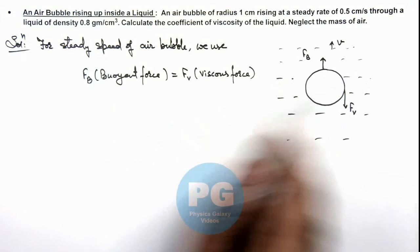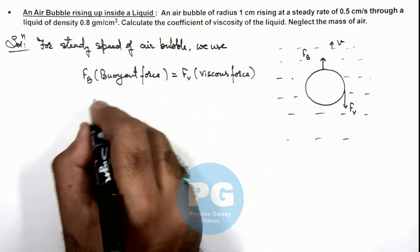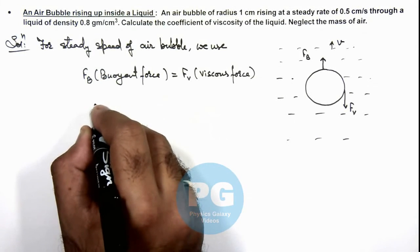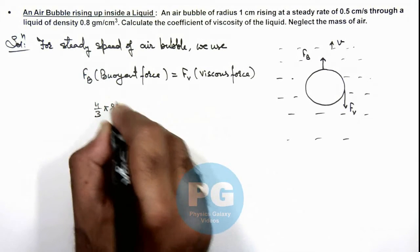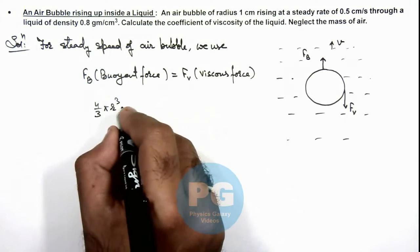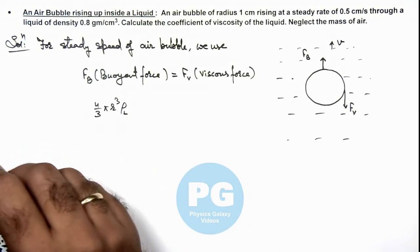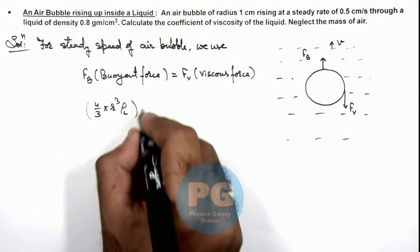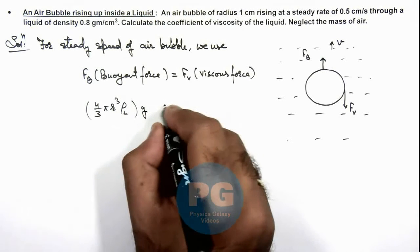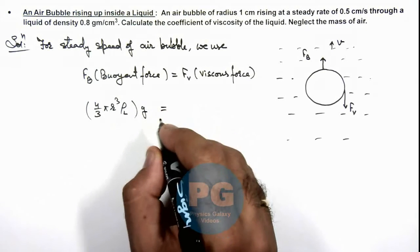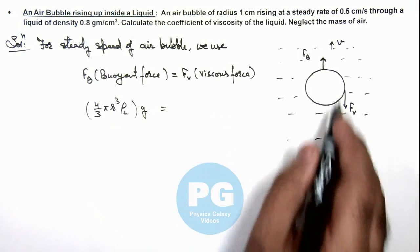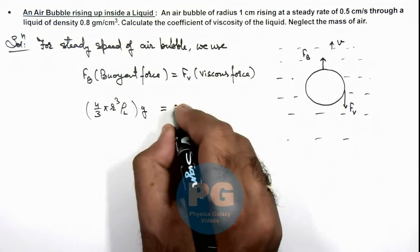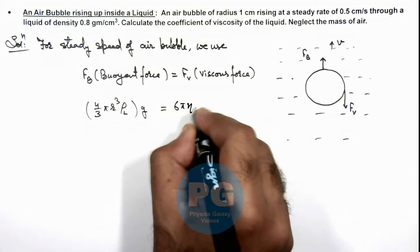Buoyant force is the weight of liquid displaced, so this can be written as: volume of air bubble is 4/3 π r³, multiplied by the density of liquid and multiplied by g. And this should be equal to the viscous force acting on it, which is 6π η r v.